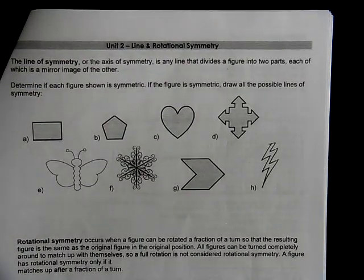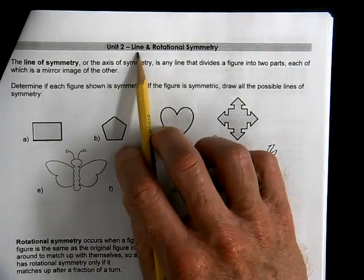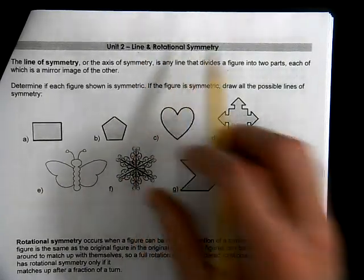This is Geometry, Unit 2. We're talking about line and rotational symmetry.